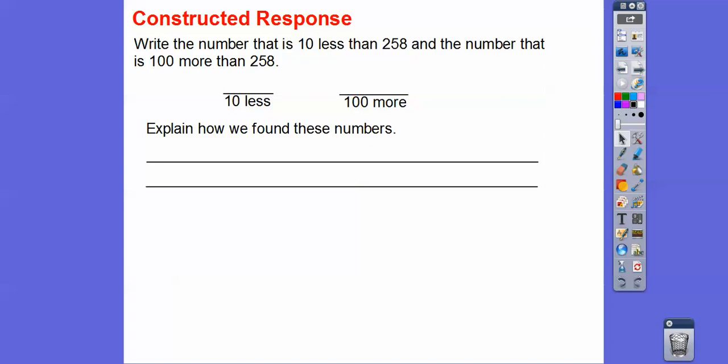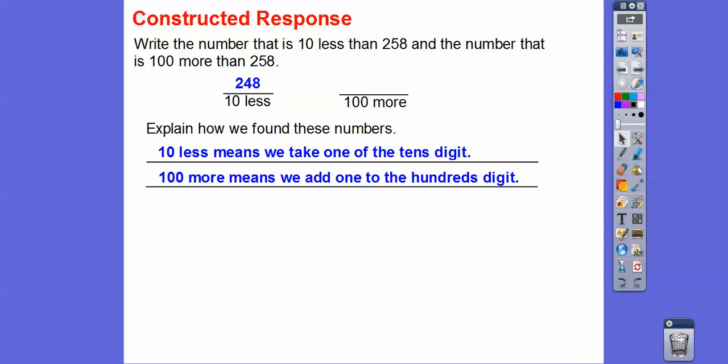Write the number that is 10 less than 258 and the number that is 100 more than 258. So 10 less than means we're going to subtract 1 from this. So that would be 248 right there. What we did is we take 1 off that tens digit. And then 100 more just means we're going to add 1 to the hundreds digit. So we're going to add 1 and this is going to be 358.